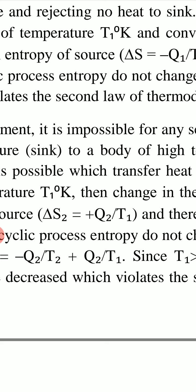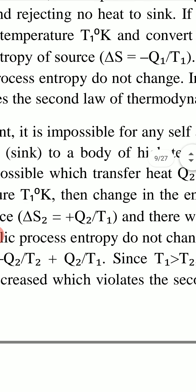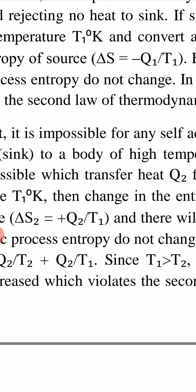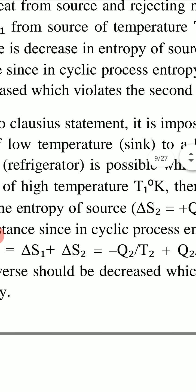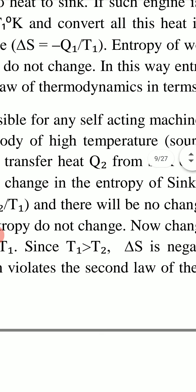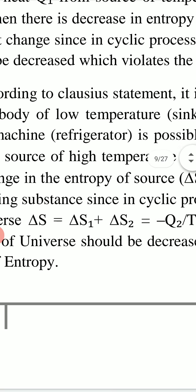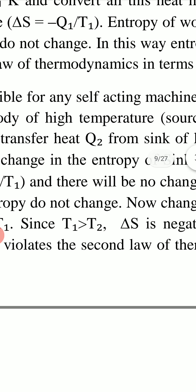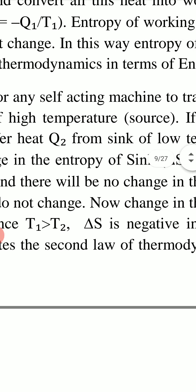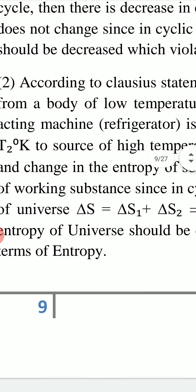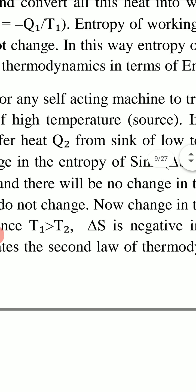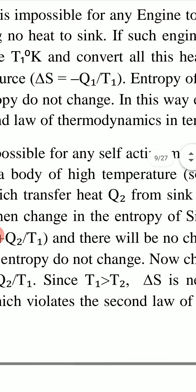The change in entropy of the source is negative because Q1 heat leaves the source, so ΔS = −Q1/T1. Entropy of the working substance does not change since entropy does not change in a cyclic process. Entropy of the sink also does not change because no heat is exchanged with it. Therefore the total entropy of the universe would be −Q1/T1, which is negative — a decrease in entropy of the universe.